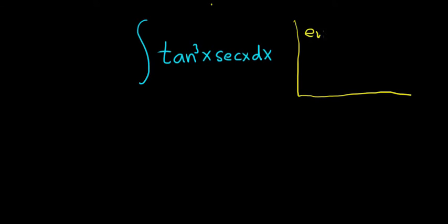If you have an even power of secant, the general rule is to save a secant squared. So you save a copy of secant squared. If you have an odd power of tangent, you want to save a copy of secant tangent. I'm purposely omitting the x's here for simplicity. So even secant, save a secant squared. Odd tangent, save a secant tangent.